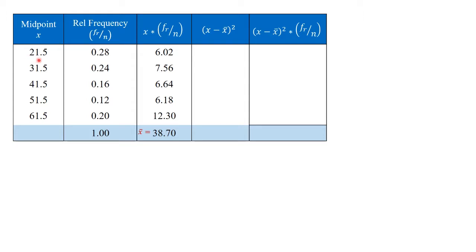To calculate the squared deviations, we start with 21.5, which is the midpoint value of the first youngest group, and subtract the sample mean. This is the sample weighted mean, 38.7. The difference between the two is 21.5 minus 38.7, and we square this difference for a total of 295.84. This is the squared deviation of the first category, the youngest group.